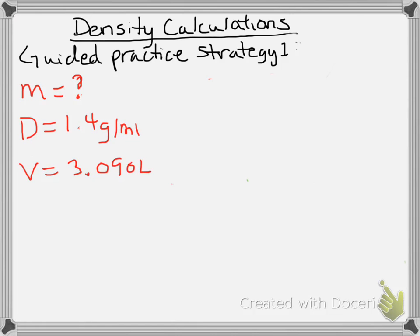Same formula though. So density equals mass over volume, so plug in what I know. I know my density is 1.4, I don't know my mass, so I'm going to put an M there as a placeholder and my volume is 3.09.